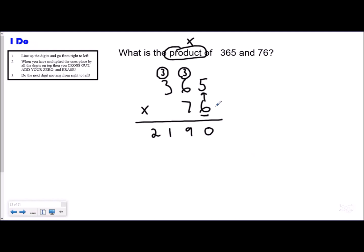I have a digit in the tens place and I have multiplied all the digits on my top factor by the digit in my ones place, so I'm going to cross out, add my zero, and erase anything that I regrouped.